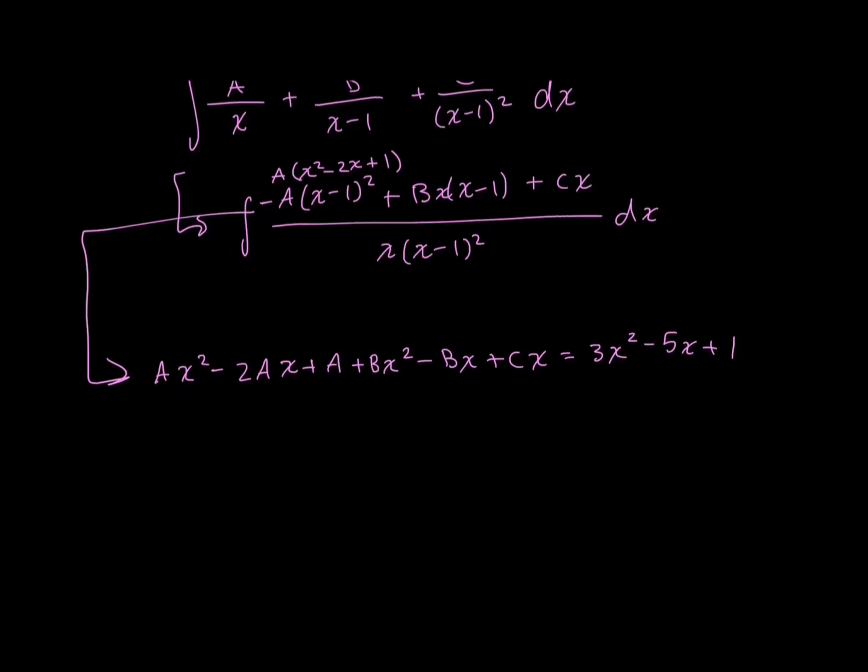And now I'm going to set up my system of equations. And as I mentioned in my previous video, the way I like to solve or come up with my system of equations is by looking at the similar degrees between the left-hand and right-hand side. So I'm going to start by my degree of 2. On the left-hand side, I have this Ax squared and Bx squared. So just omitting that x squared, I have A plus B is going to be equal to whatever has a degree of 2 on the right-hand side, which is just 3.